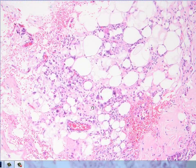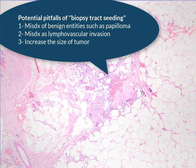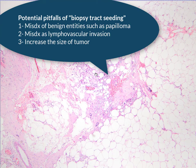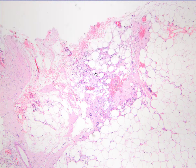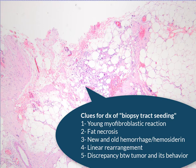Finally, I found that these tumor cells are also within the fat necrosis here. This is a very well-known phenomenon called needle tract seeding. It is important because you may falsely call this lymphovascular invasion, or you may increase the size of the tumor, which may lead to clinical consequences. It may also be seen in benign lesions such as papillomas — even lymph node seeding has been seen after needle biopsies from papillomas.